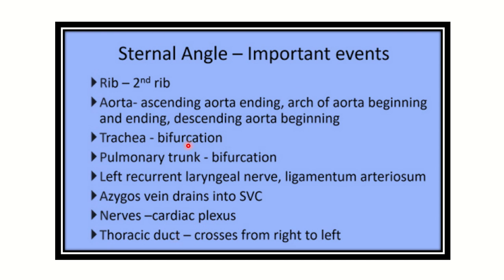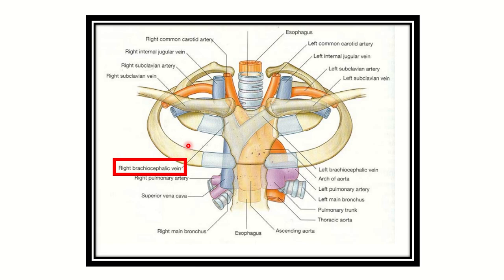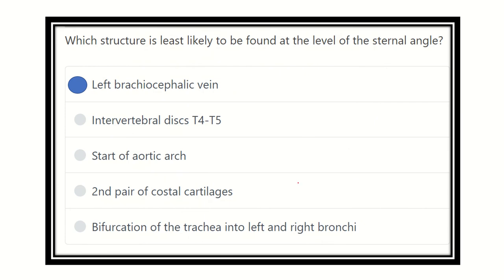In this picture we can see the first costal cartilage and the second costal cartilage, confirming that the external angle is at this level. We can see the superior vena cava with the azygos vein draining into it, the ascending aorta ending at this level, the pulmonary trunk dividing here, and the trachea bifurcating at this level — all confirming the structures present at the external angle.